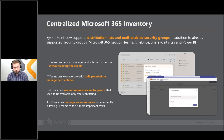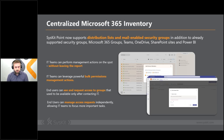In addition to Microsoft 365 groups, Teams, OneDrive, SharePoint sites, Power BI, and security groups that we already supported, we have added support for distribution lists and mail-enabled security groups. IT teams can now add or remove users and perform all management actions for those groups directly from the report — even in bulk. And if you enable it, end users can see and request access to those groups without contacting IT, with owners approving or rejecting requests.